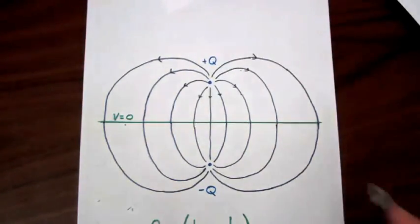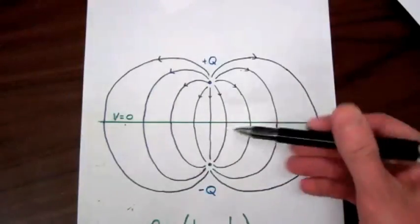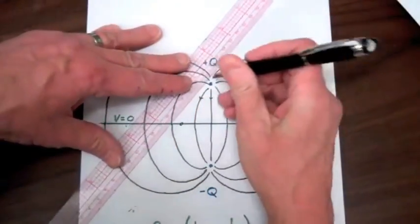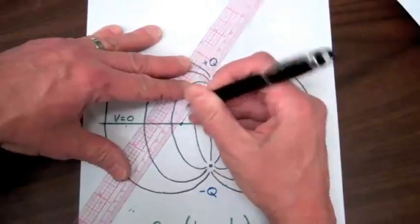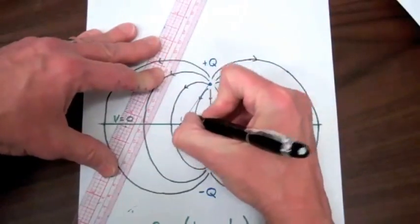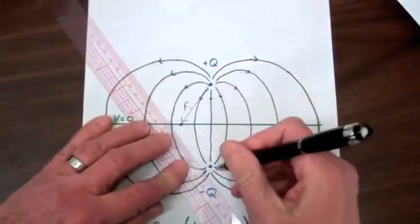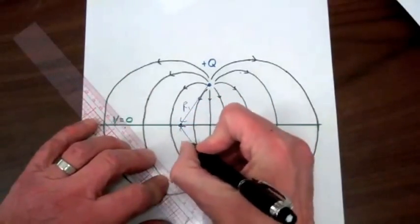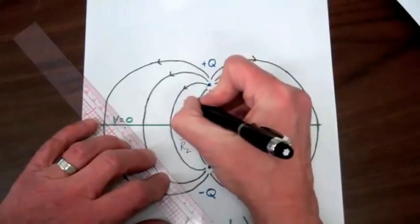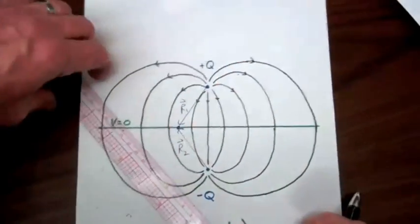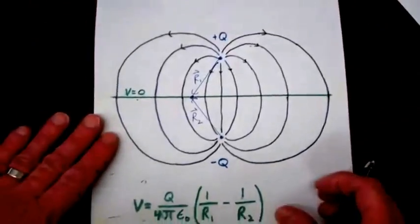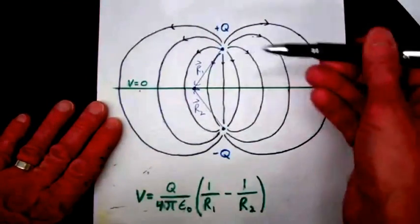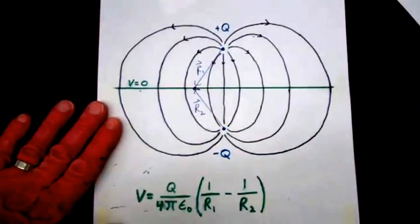If we go to any point on the plane midway between our two charges, the lengths of r1 and r2 will be the same.